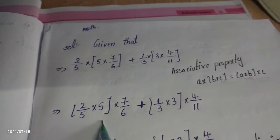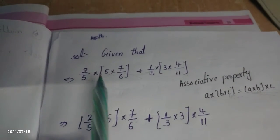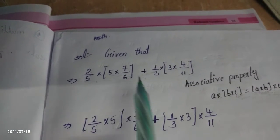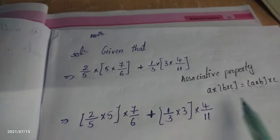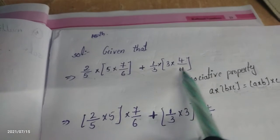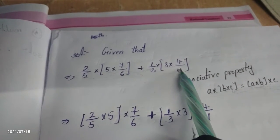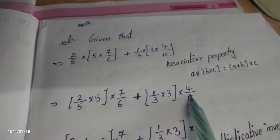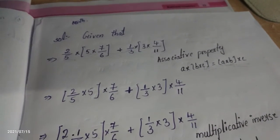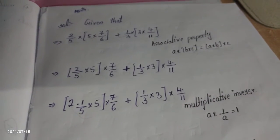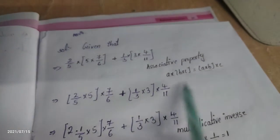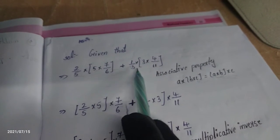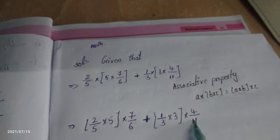We apply the formula — this side is also in the form A into B into C, with the last two numbers multiplied first. We change it to multiply the first two numbers first. In the next step, applying the first two numbers: 2 by 5 into 5, and the third number is written as it is. Similarly, 1 by 3 into 3, with the last number as it is.